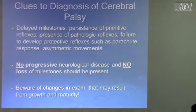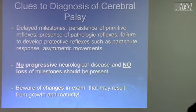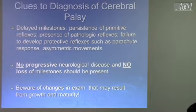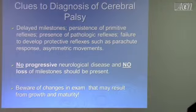Failure to develop protective reflexes such as the parachute response, and asymmetric movement. We love asymmetry in neurology — if a child is kicking with his hands and legs but not kicking as hard with his right leg as the left, you know there's some problem. Asymmetry is very significant.